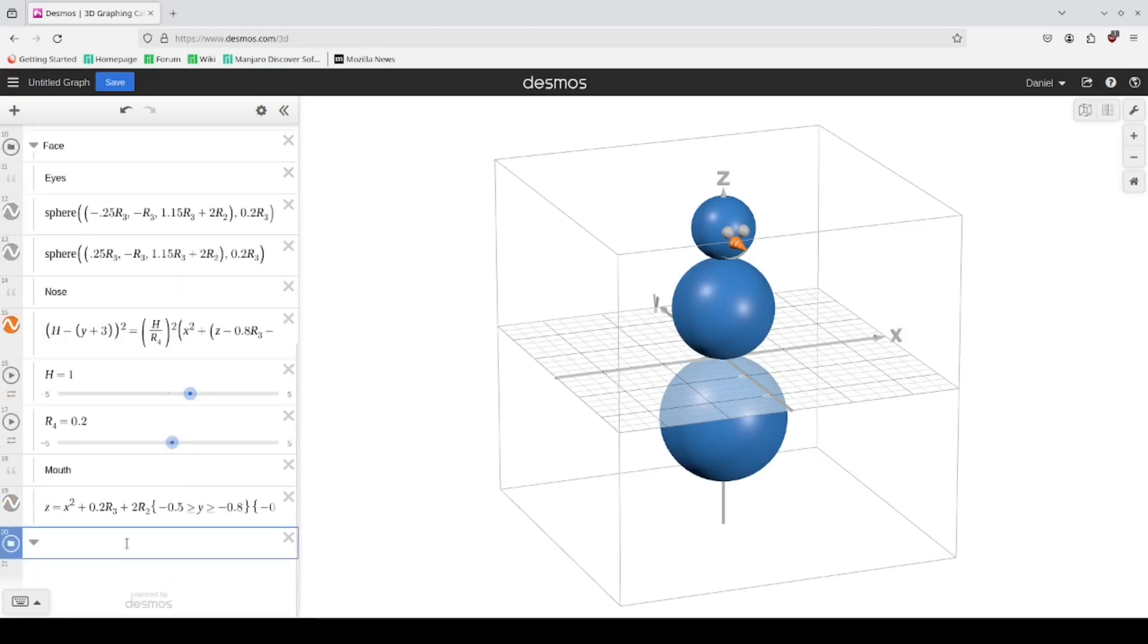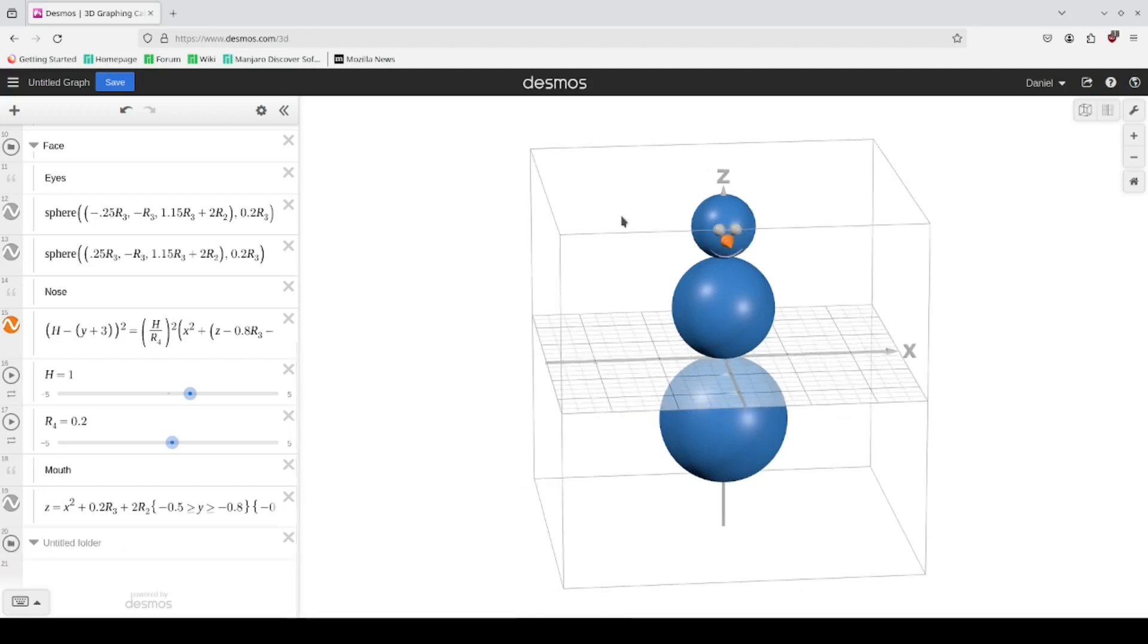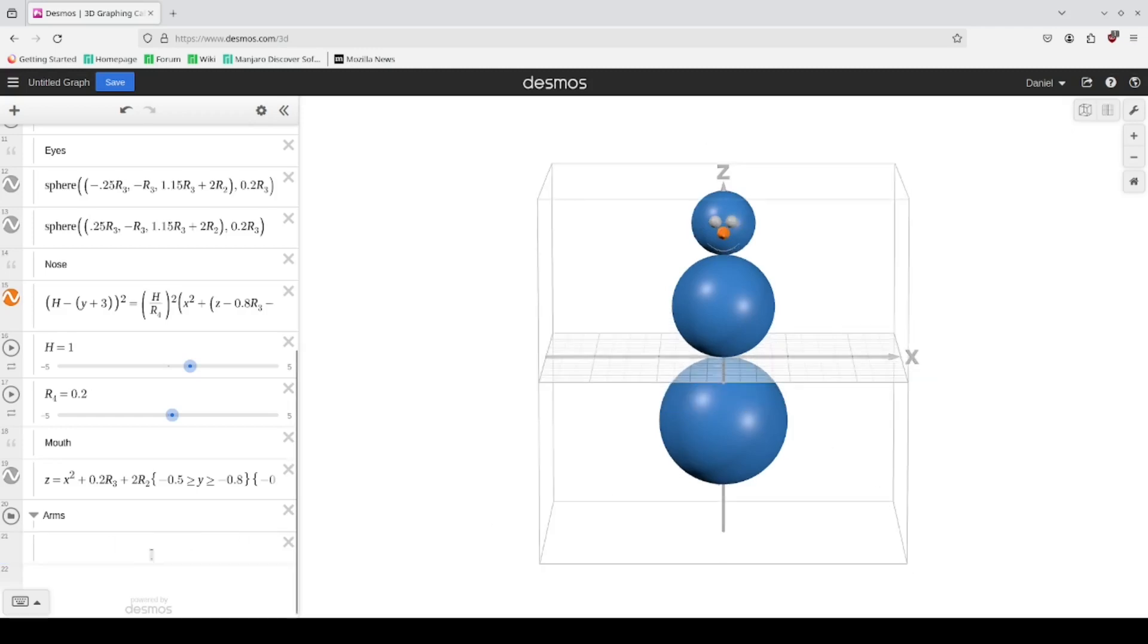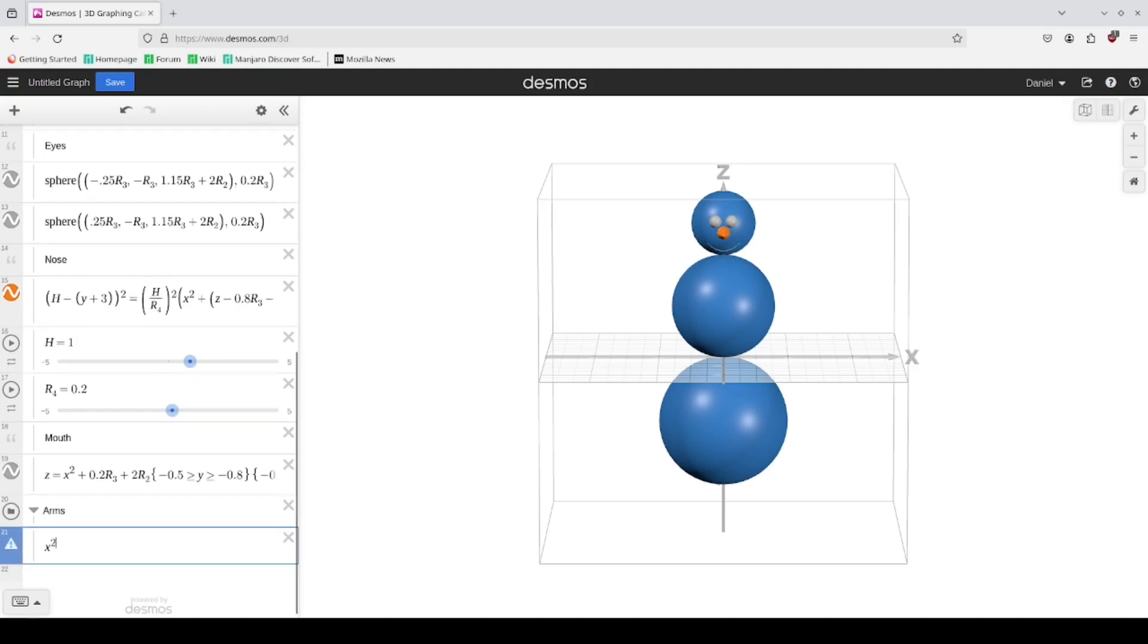But instead I want to go with the hyperbola, since you can run one side in and the other side will run out. This I'm going to call Arms. For the hyperbola there are two versions of this. I believe it's x squared plus z squared is equal to one of some kind. I know that's a circle, it's minus.